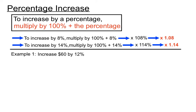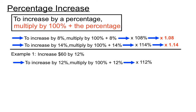Let's have a look at an actual example. The question might say: increase $60 by 12 percent. To increase by 12%, we multiply by 100% plus 12%, so we multiply by 112%. The easiest way to do that is to think of it as a decimal — we multiply that $60 by 1.12.